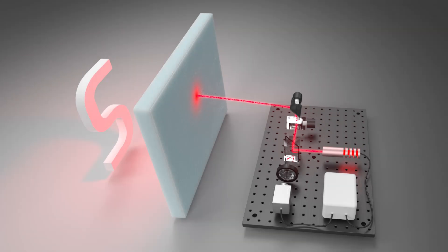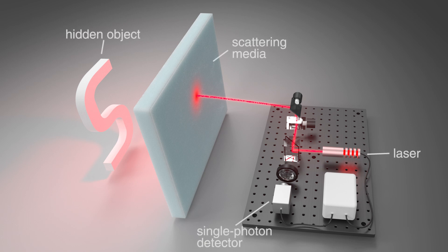In this work we introduce confocal diffuse tomography for non-invasive 3D imaging through scattering media. Confocal diffuse tomography uses a laser to illuminate a point on the scattering media with a short pulse of light.